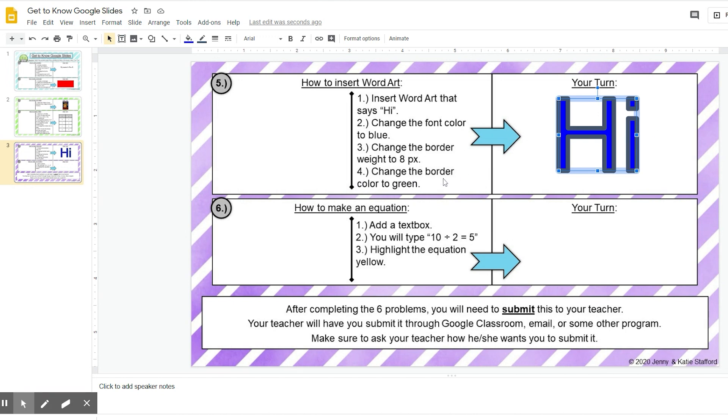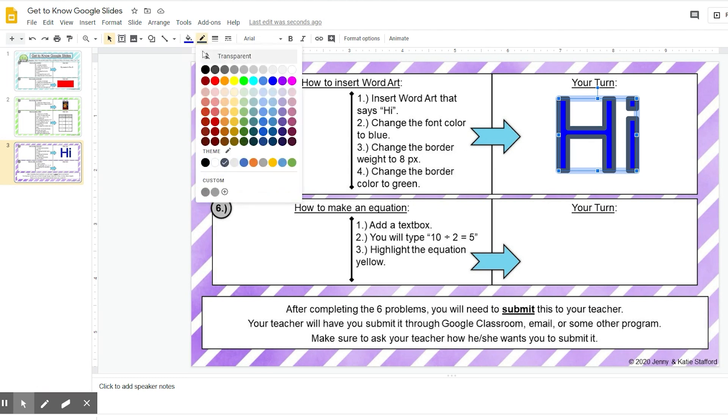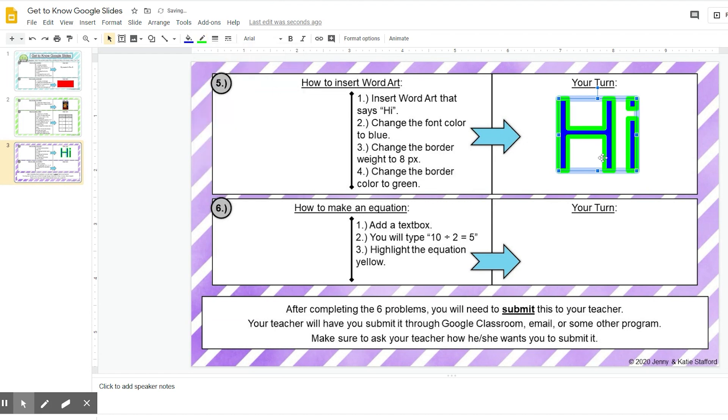Step four, change the border color to green. Now the border color right here is dark gray and we want it to be green. We're going to go up here to where it says border color and change that to green. I'm going to click on green and you can see it changed the border color to green. And that is it for problem number five.